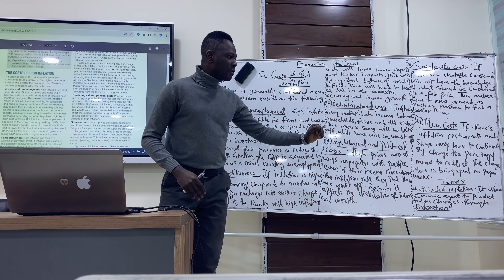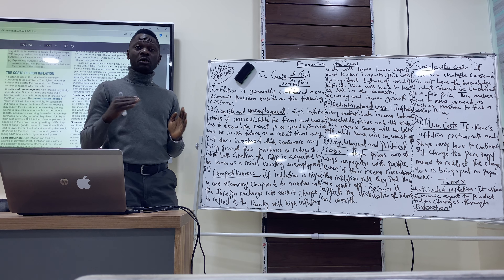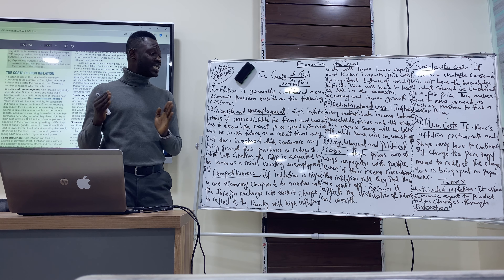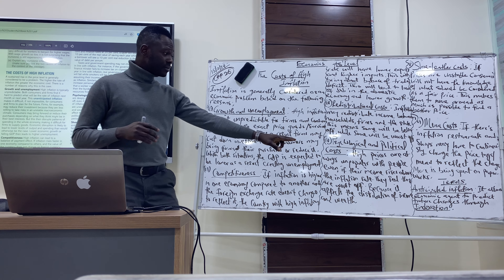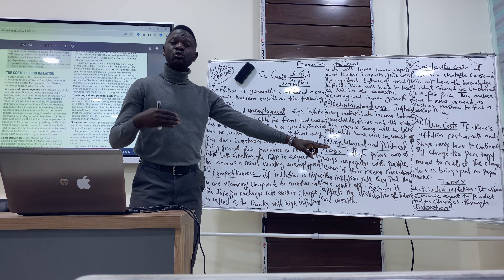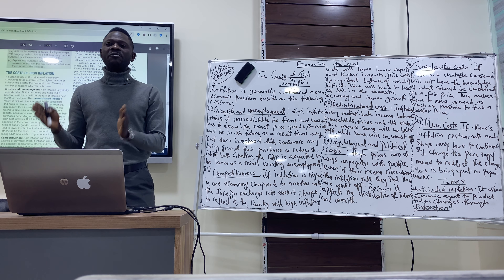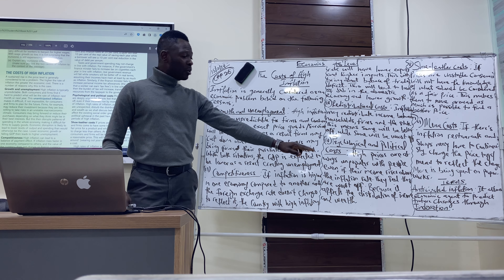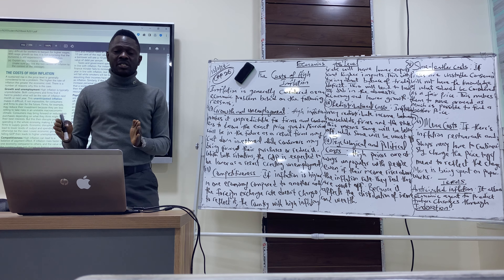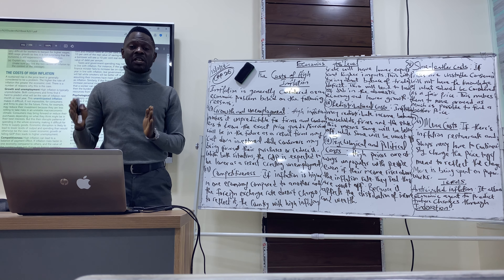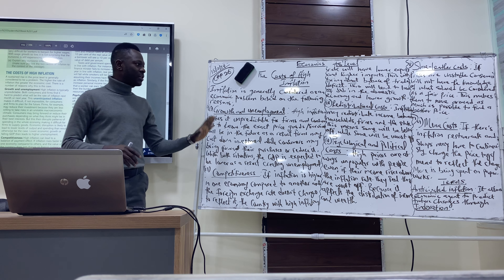So what can be done when we have high inflation rates? If inflation is anticipated — we call this anticipated inflation — the economic agent is able to predict what the future might be. As a result, they can plan for inflation through indexation. Indexation means that you are able to adjust for high inflation through wages or taxes. So this is all about the high cost of inflation.